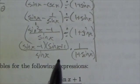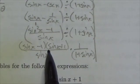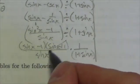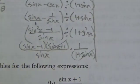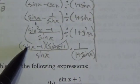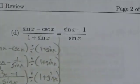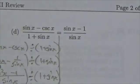There's the answer. Because I've got a common factor of sine of x plus 1 here and here. And so what that leaves me with is the sine of x minus 1 over the sine of x which is what I see on the right hand side.